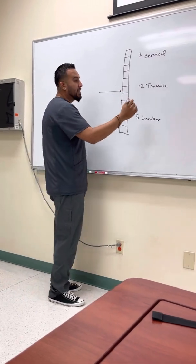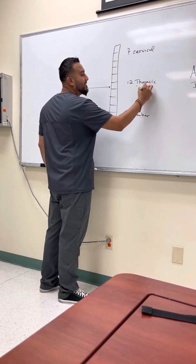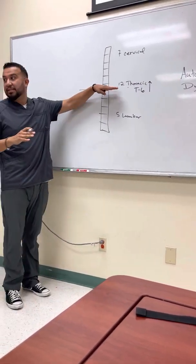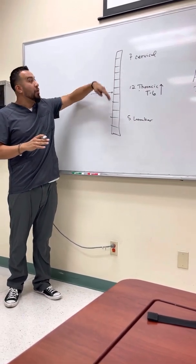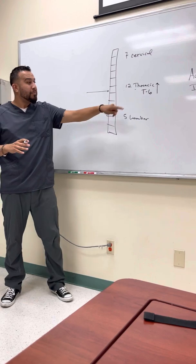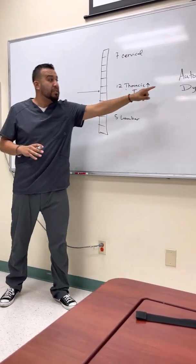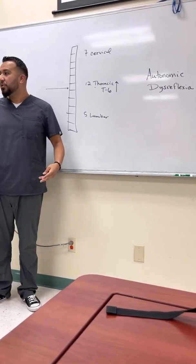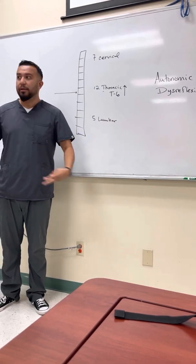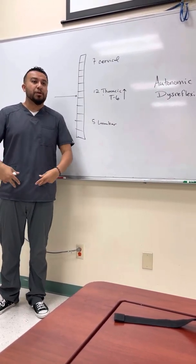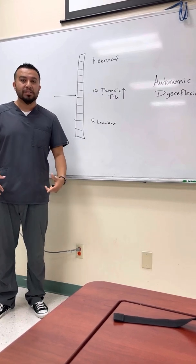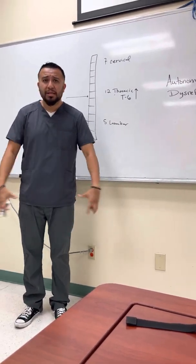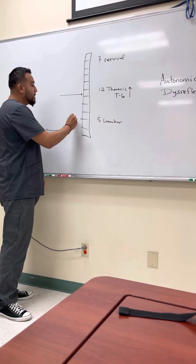It usually happens in theory when you have an injury to your thoracic vertebrae at T6 or above — meaning T6, T5, T4, T3, T2, T1, or any of the cervical vertebrae. At any point when you have an injury at T6 or above, you're at risk for developing this condition. It develops when the patient is not moving much and peripheral nerves are sending a signal that there's an uncomfortable feeling — like a distended bladder, constipation, or shoes that are too tight. Anything stimulating below the level of the injury is sending signals to the CNS.